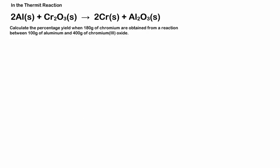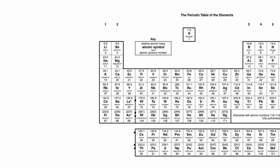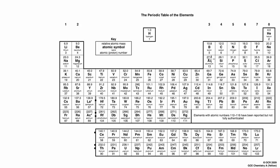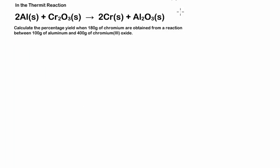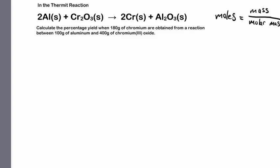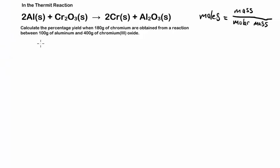So I have my trusty periodic table here. The equation I need to use is: moles equals mass over molar mass. Aluminum has a molar mass of 27.